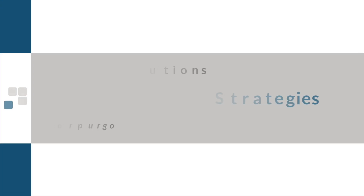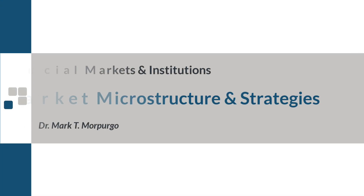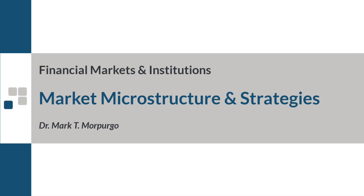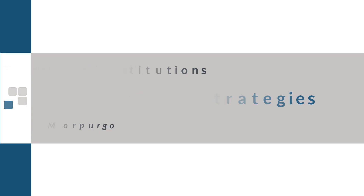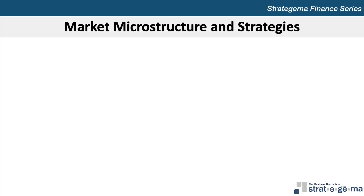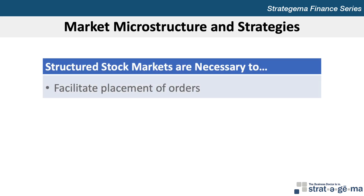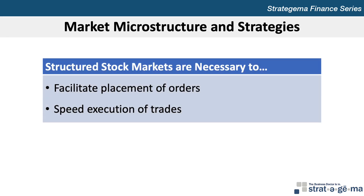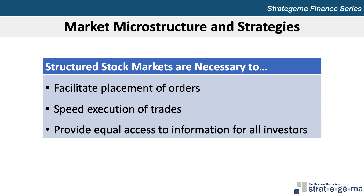This video provides an overview of the major concepts covered in Chapter 12, Market Microstructure and Strategies. Much attention has been given to market microstructure, which is the process by which securities such as stocks are traded. For a stock market to function properly, a structure is needed to facilitate the placing of orders, speed the transaction of trades, and provide equal access to information for all investors.